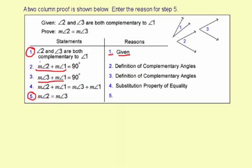So if you take this first statement, measure of angle 2 plus measure of angle 1 equals 90 degrees, and substitute in here the measure of angle 3 plus measure of angle 1, you get the step 4 based on the substitution property of equality.